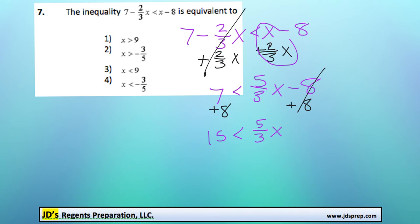And then essentially what we're going to do is multiply by 3/5ths. And by doing that, these 3s will cancel out, and the 5s will cancel out. We'll do the same thing over here.